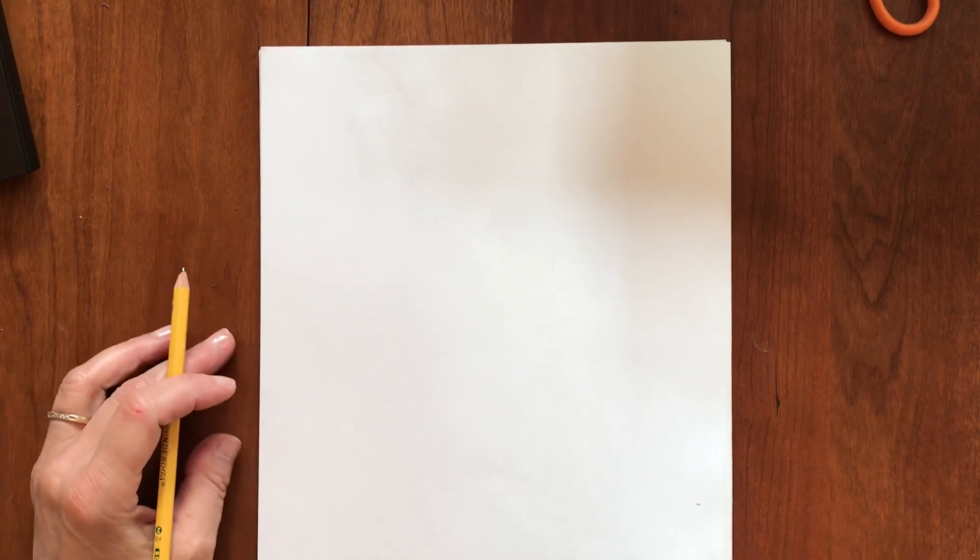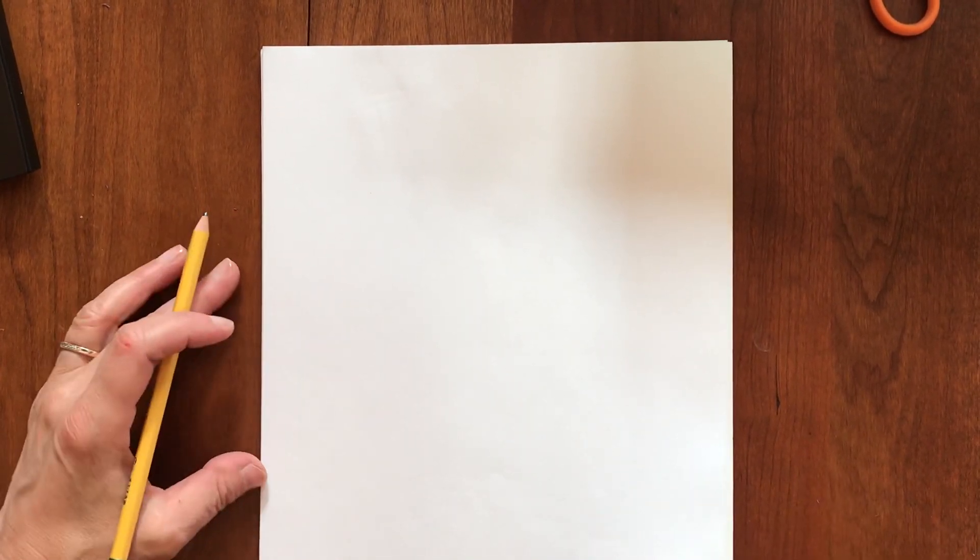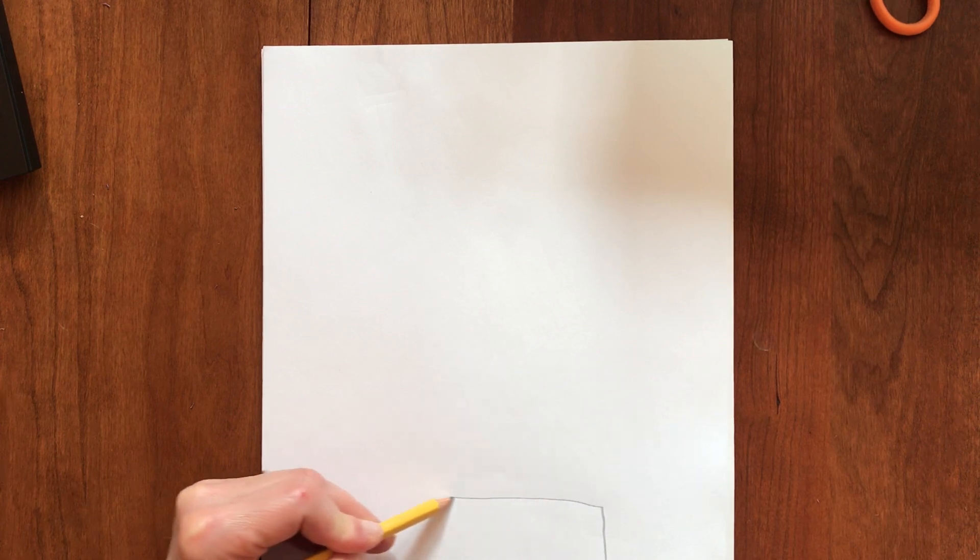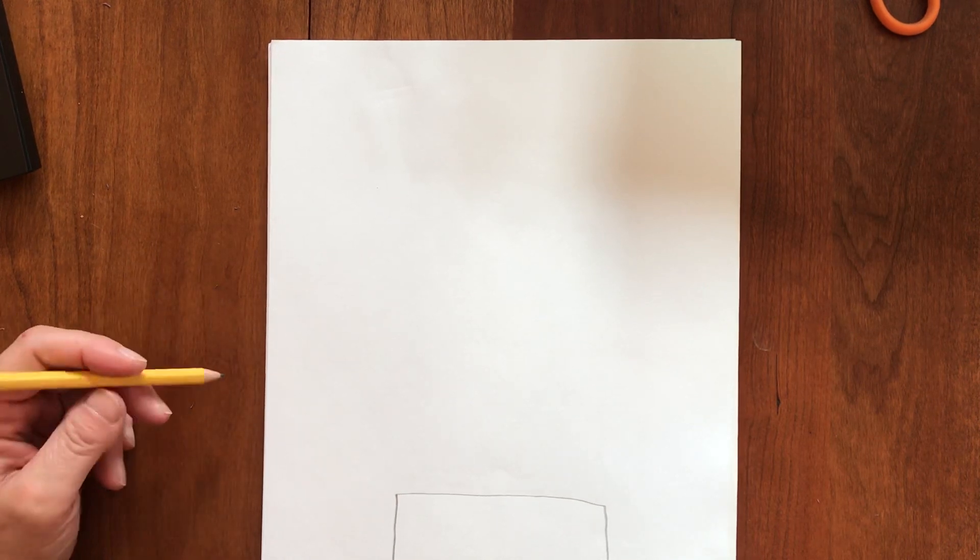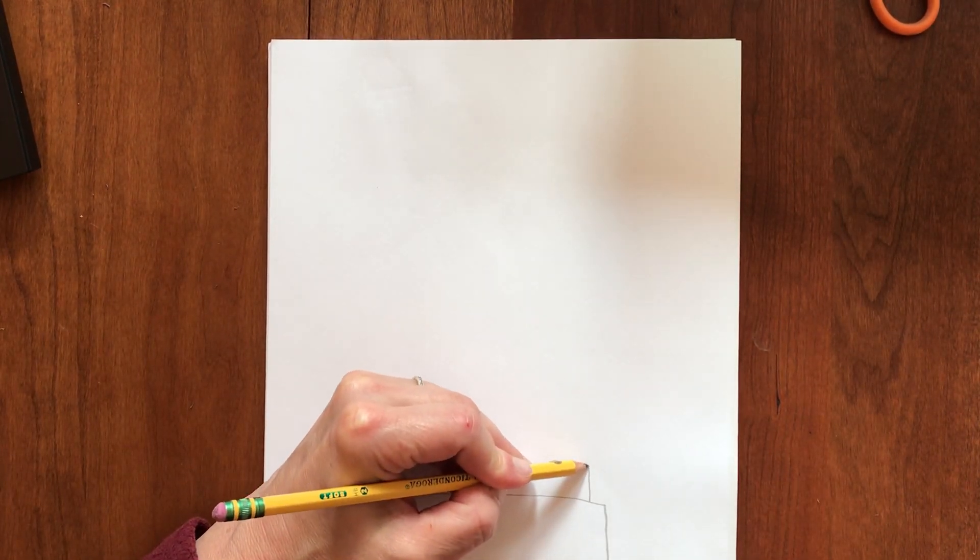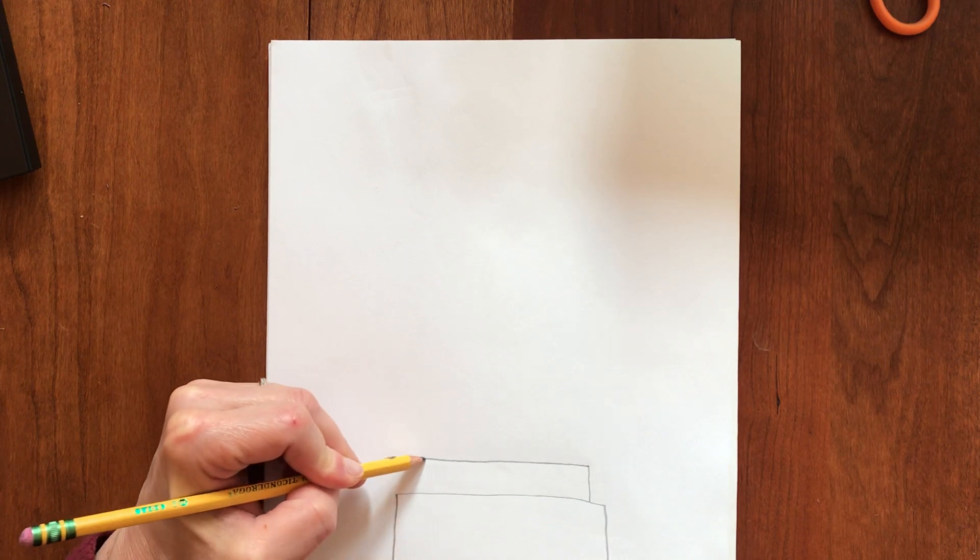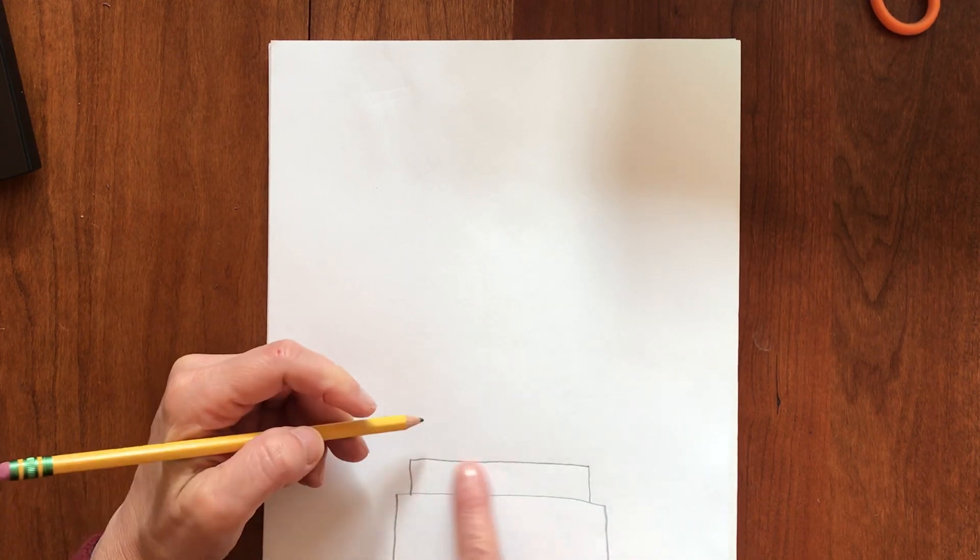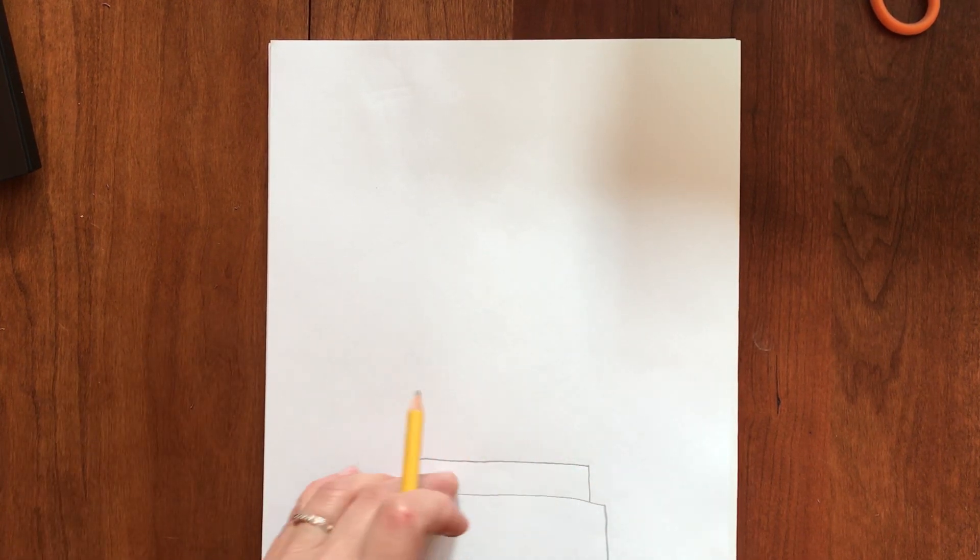We're going to be drawing the Statue of Liberty, a symbol of America and freedom. So first we'll start with the base, basically a rectangle or square, and then a platform which is also a rectangle but shorter.